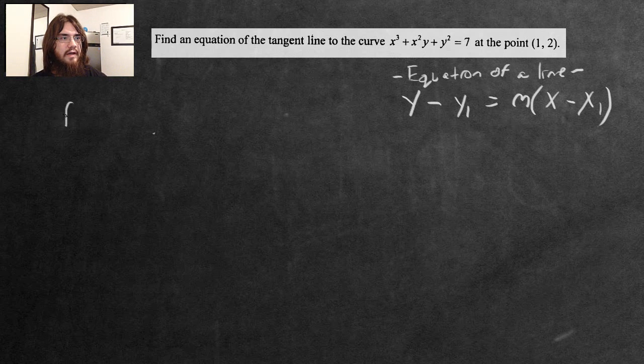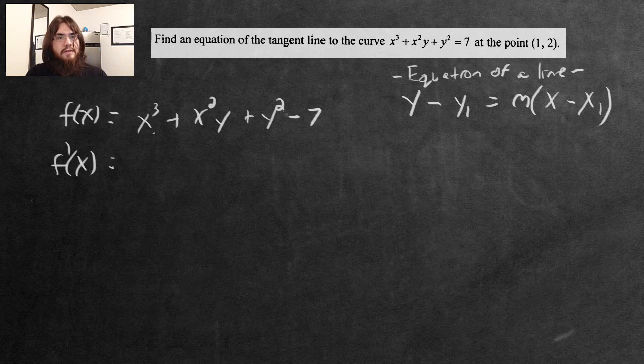So let me write out the actual function we're dealing with here: f(x) = x³ + x²y + y² - 7. We have the point (1,2) there, but that'll come into play a bit later.